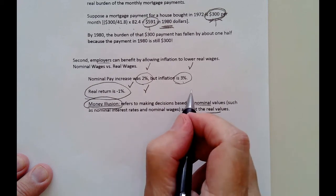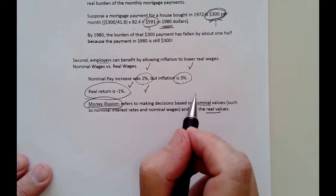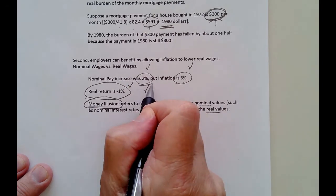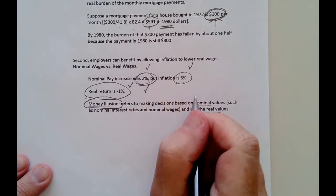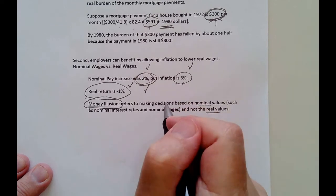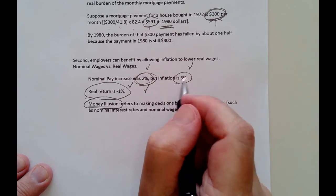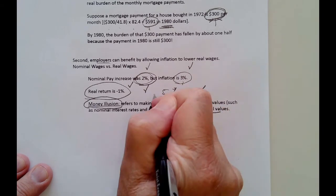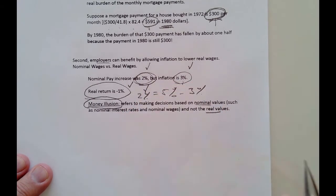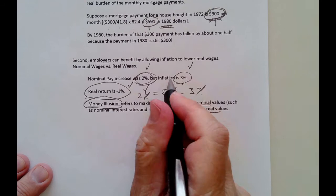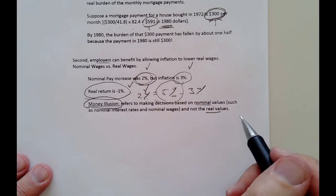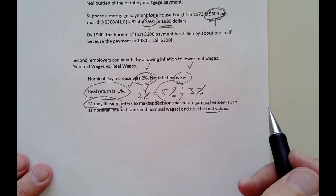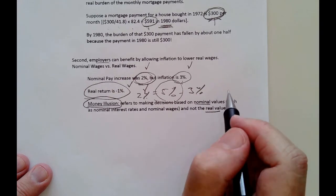Understanding real returns can help you make better decisions. What this person should do is go to the boss and say: you're trying to give me a 2% pay increase when inflation is 3% — you really should give me a 5% raise. Because 5% minus 3% gives a real return of 2%. So the employee should go to the employer and say: give me a 5% pay increase so I have a 2% positive return over the rate of inflation. That's not being fooled by money illusion.